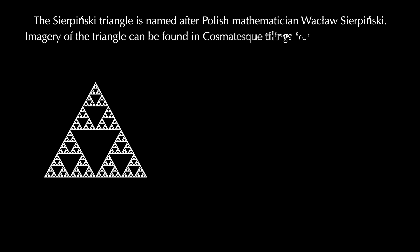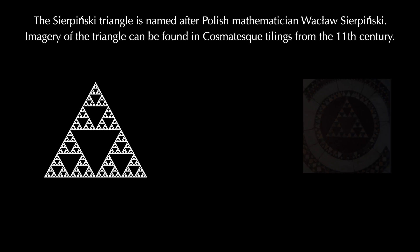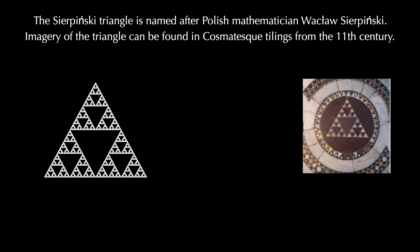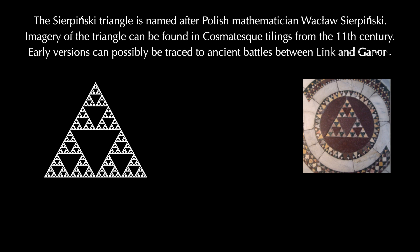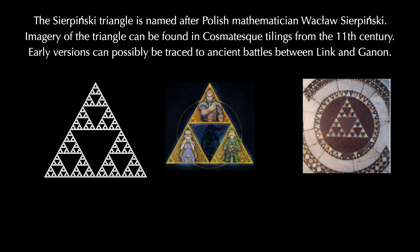For instance, Cosmatesque tilings from the 11th century contained this kind of image — this is from a basilica in San Clemente. There are even hints that early versions can be traced to mythical ancient battles between Link and Gannon.